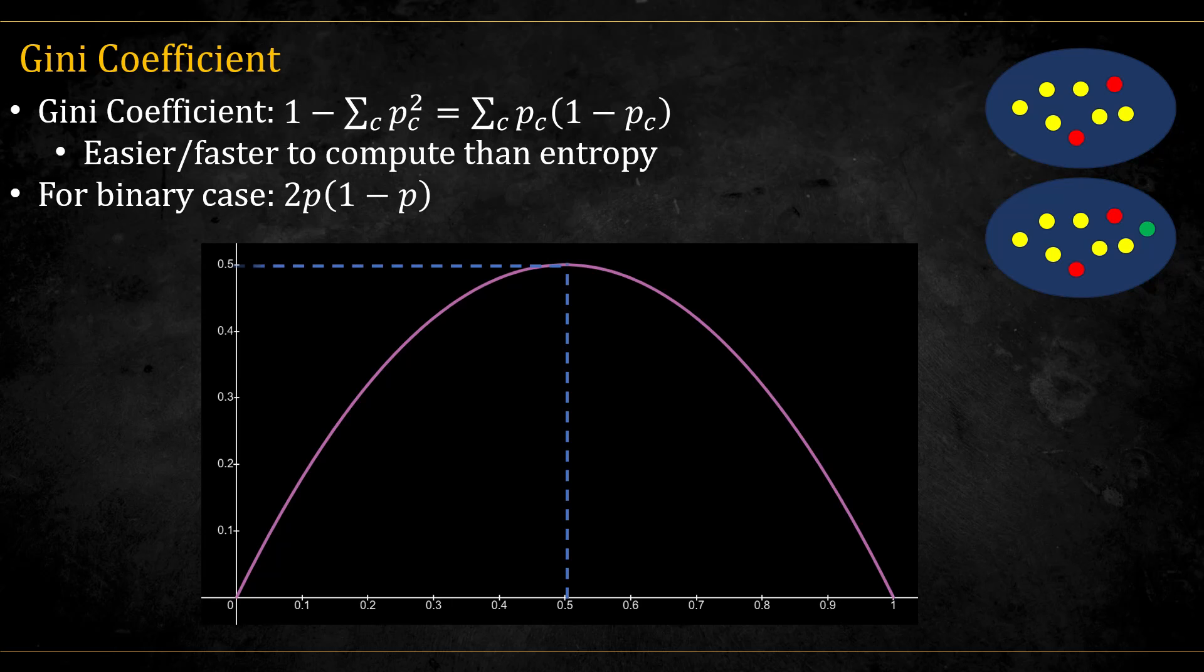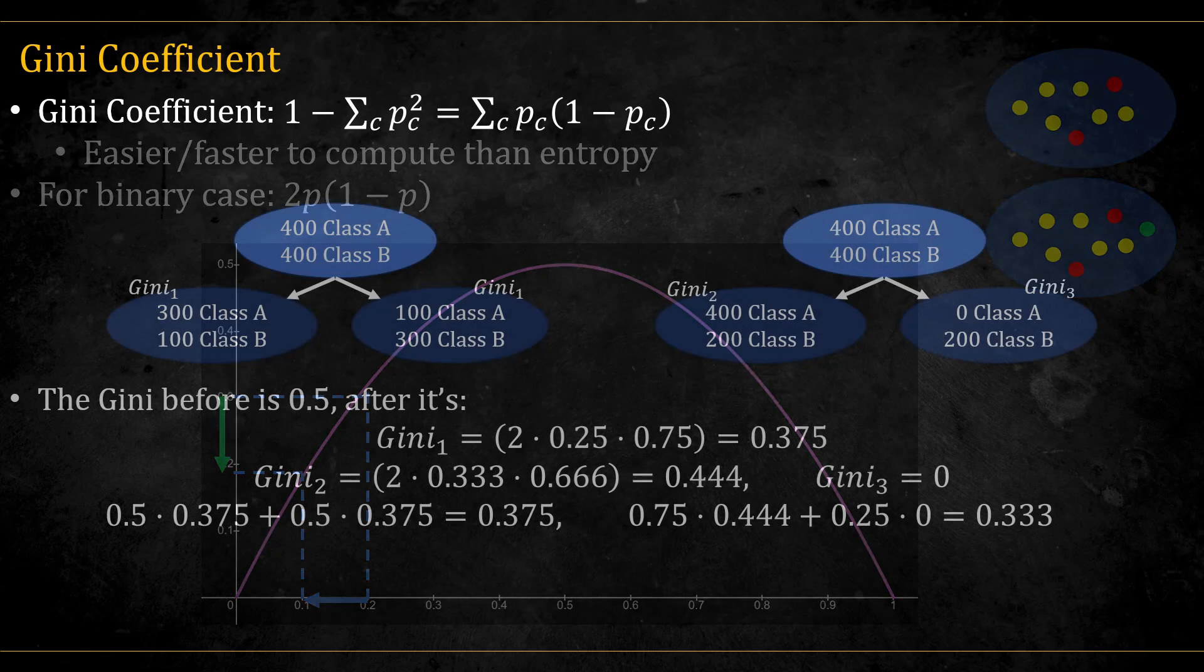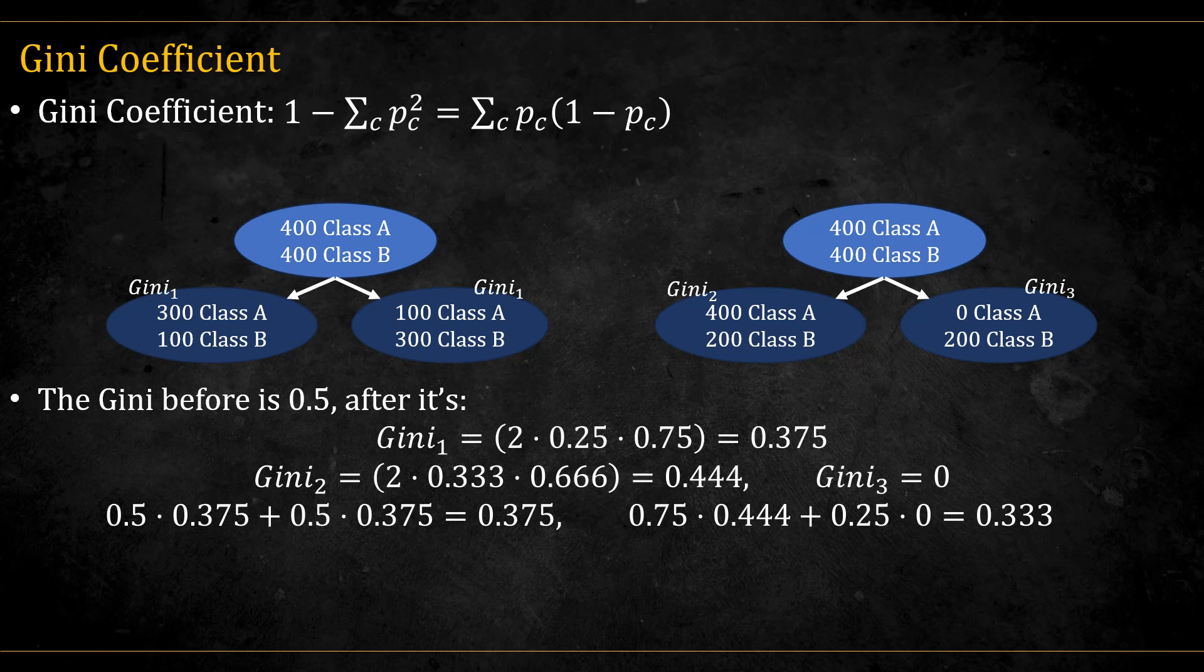But notice the non-linear way the graph goes down from it. We see that a reduction of p by 0.1 from 0.5 to 0.4 does not translate to a big reduction in impurity. But the reduction from 0.2 to 0.1 does translate to a big reduction. This means we care more about making nodes completely pure than making them a bit more pure. In the example before, the right split will have overall less impurity after, going down from 0.5 to 0.333 as opposed to 0.375.